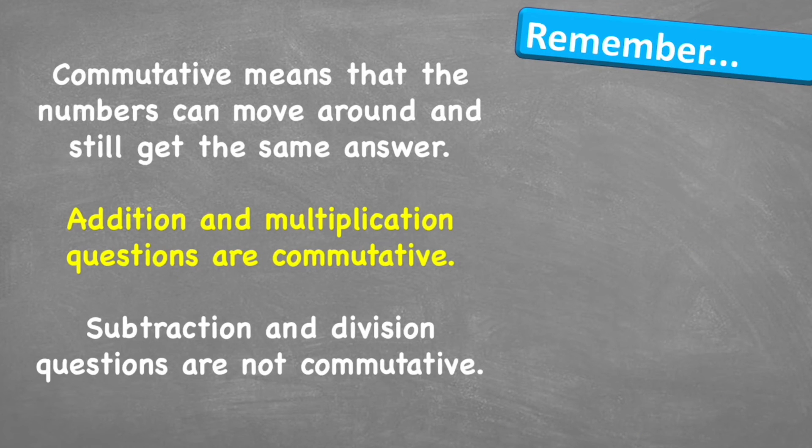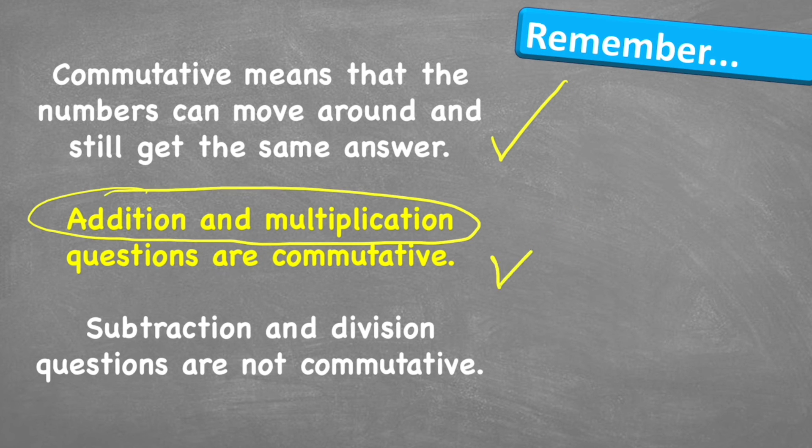So what have we learned? What do we have to remember? Remember, commutative means that the numbers can be moved around and still get the same answer. So if it's commutative, we can move them around. Addition and multiplication questions are commutative. Subtraction and division are not.